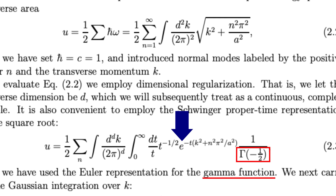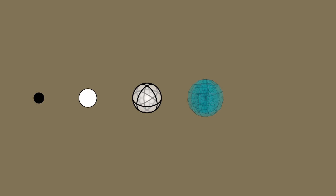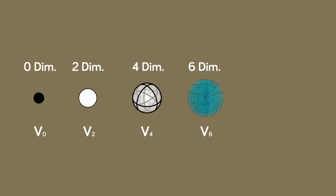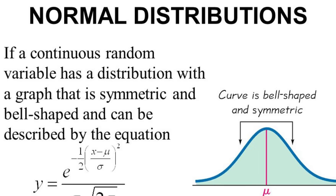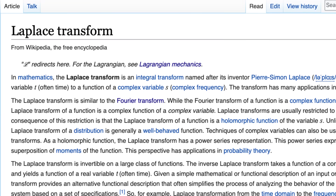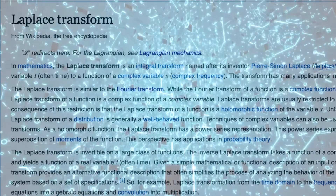The applications of Euler's number still don't stop there. The classic normal distribution or bell curve contains Euler's number. The Laplace transform, used to simplify calculations for things like circuits and control systems, also includes Euler's number. And I could go on for a while.